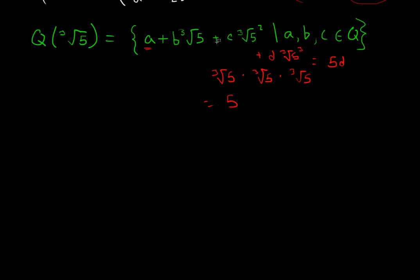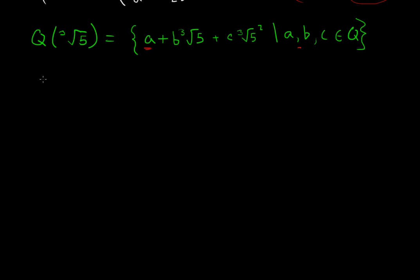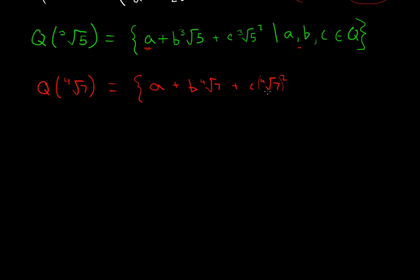This is really similar to what we had with Q adjoin √2 — everything pretty much behaves the same way, you just have three terms here rather than two. We could do another example: Q adjoin the fourth root of 7. It would just be a + b·⁴√7 + c·(⁴√7)² + d·(⁴√7)³, and we stop there because if we went one more, that would be the fourth root of 7 to the fourth, which is just 7. So A, B, C, and D are rationals.